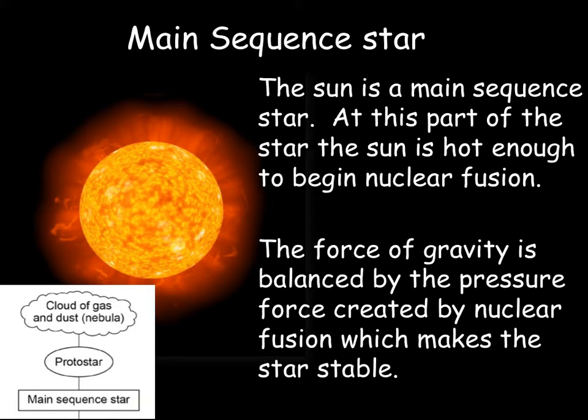Once the pressure and temperature is hot enough for nuclear fusion to occur, that is now a main sequence star. Up until this point we've only looked at the force of gravity, which pulls the dust and gas together to form the protostar. But now gravity is bringing the nuclei together and it's hot enough, dense enough, and under enough pressure for nuclear fusion to begin. Nuclear fusion creates its own pressure force equal but opposite to gravity, so those forces are balanced and the main sequence star is stable.